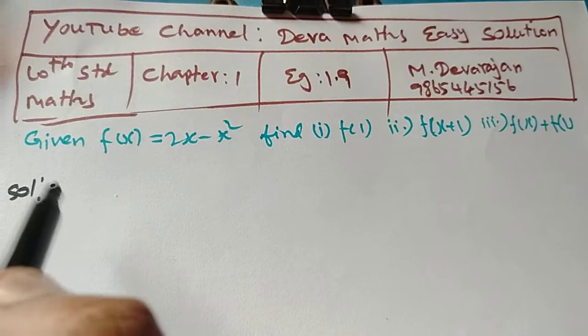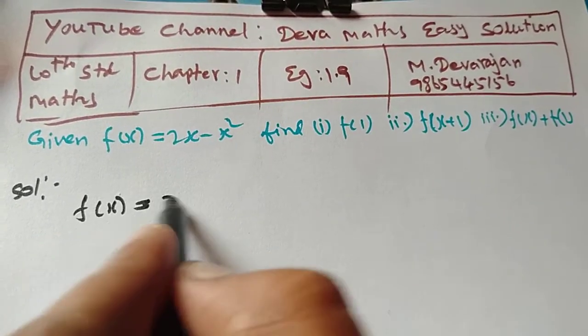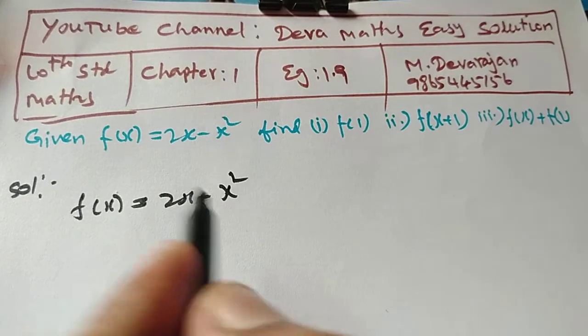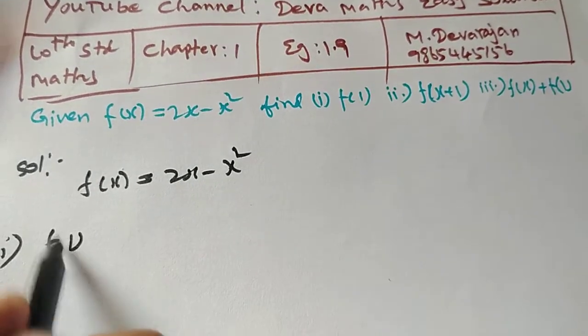For solution, first given function f of x equal to 2x minus x square. So first one, f of 1.